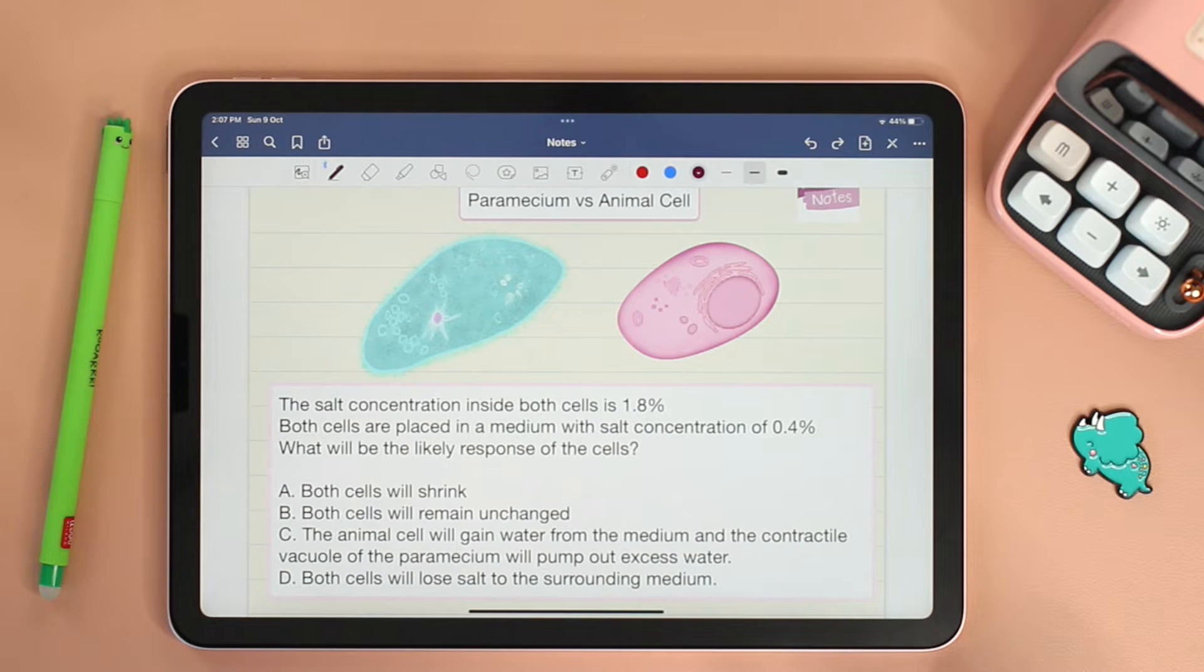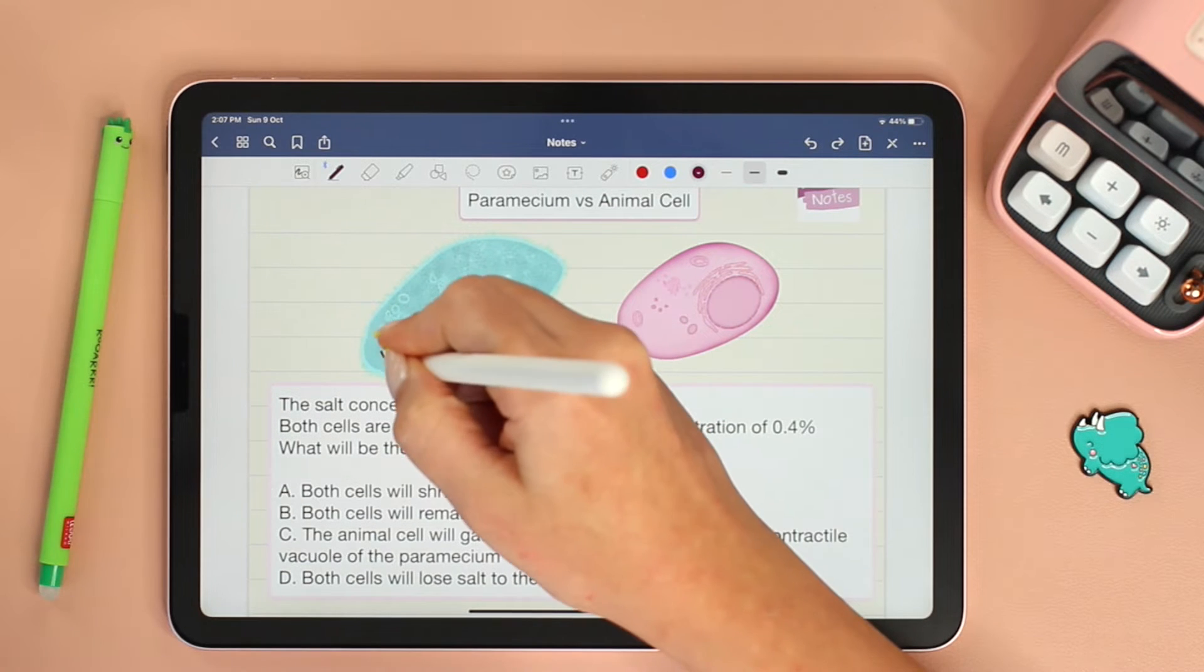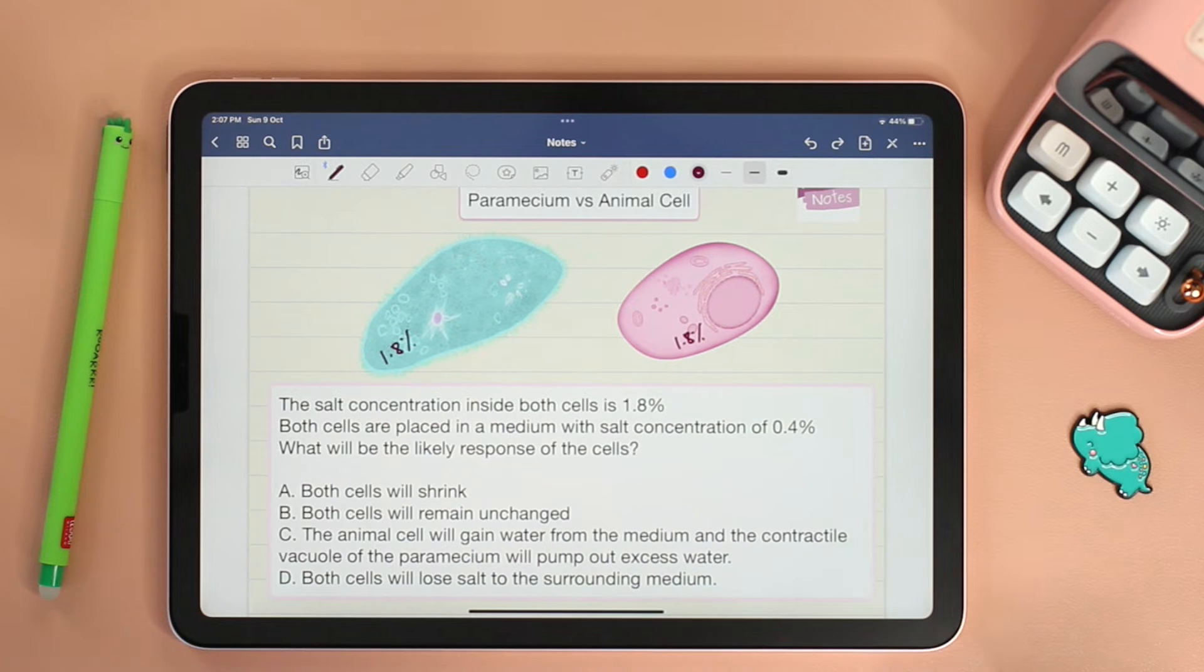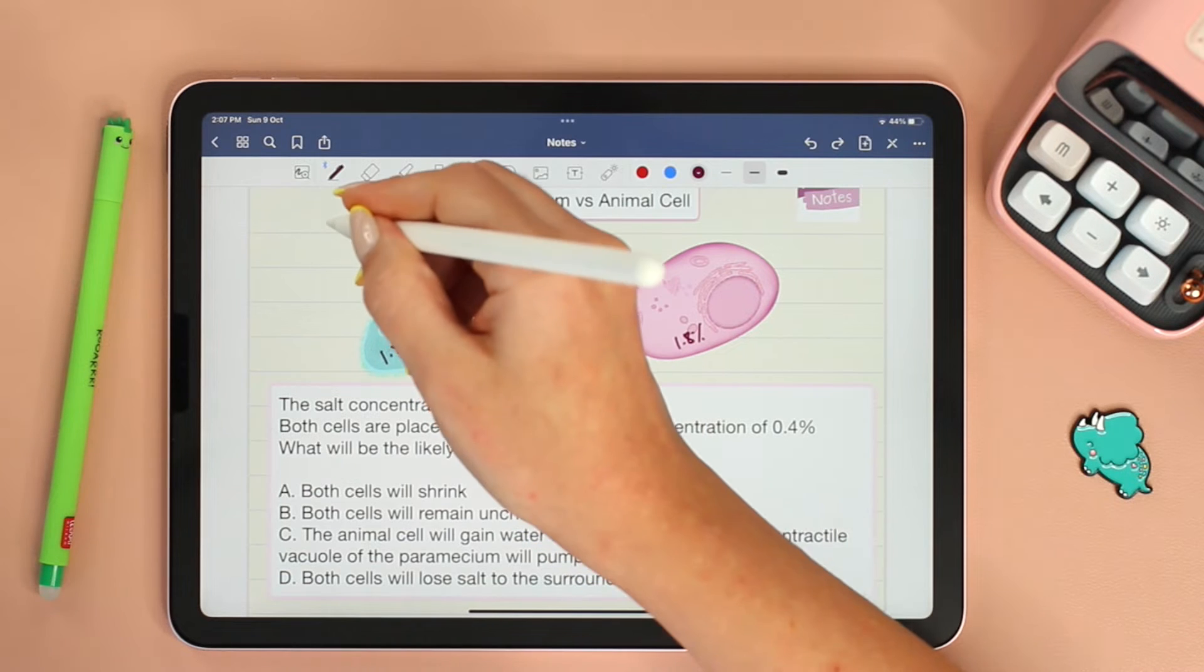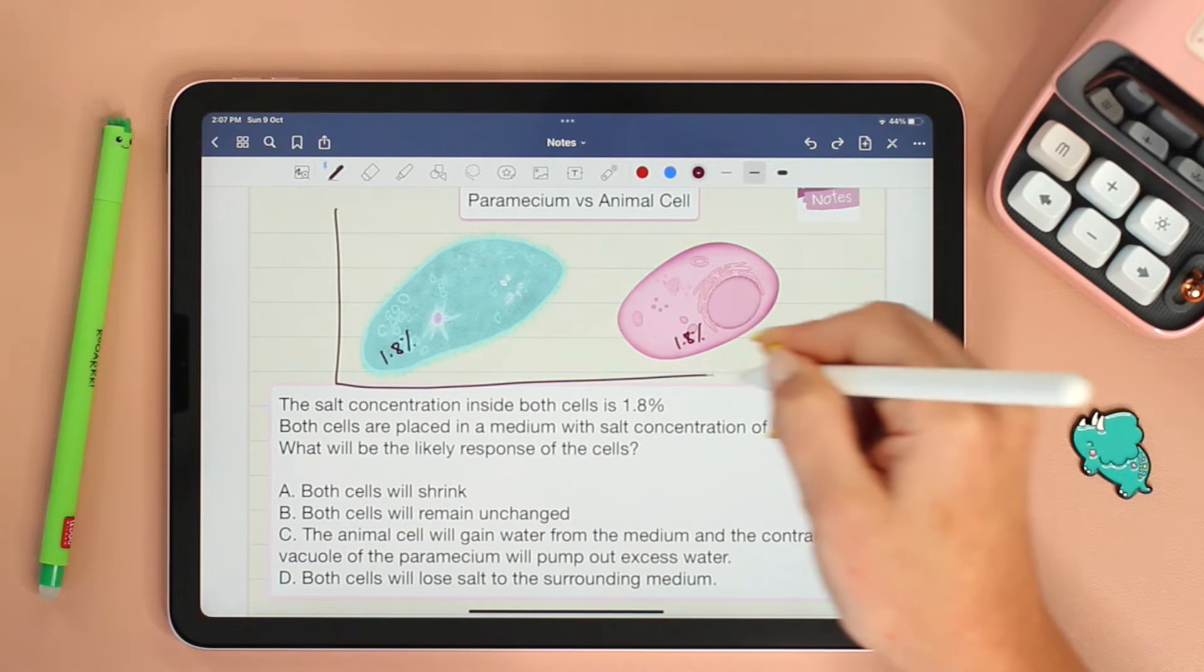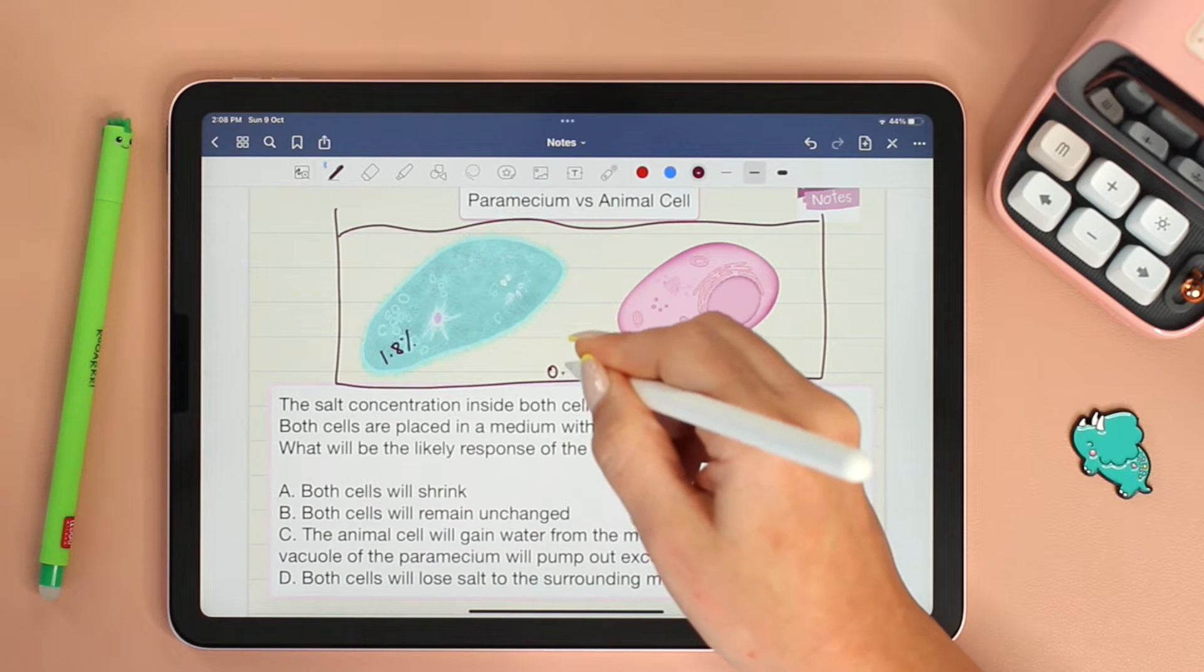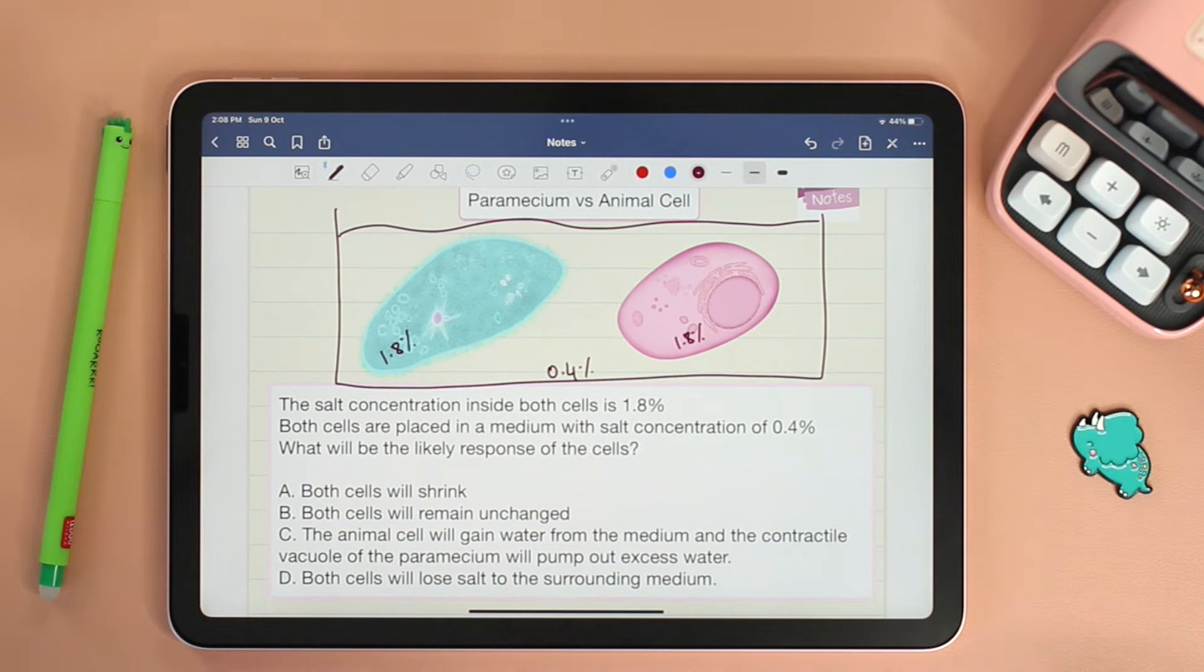Let's read the question. The salt concentration inside both cells is 1.8%. Both cells are placed in a medium with salt concentration of 0.4%. So we are placing both cells in a medium of 0.4% salt concentration. What will be the likely response of the cells?